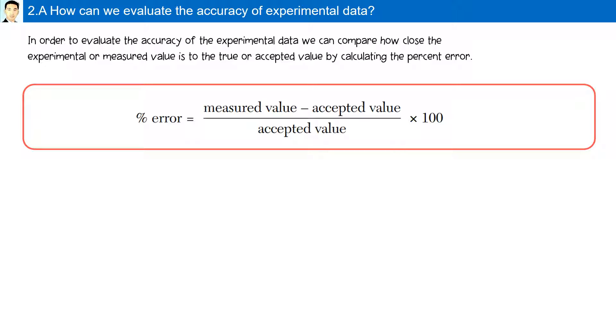The formula is measured value minus accepted value divided by the accepted value multiplied by 100. The values obtained during an experiment are known as the measured values. The value that is considered true is known as the accepted value.